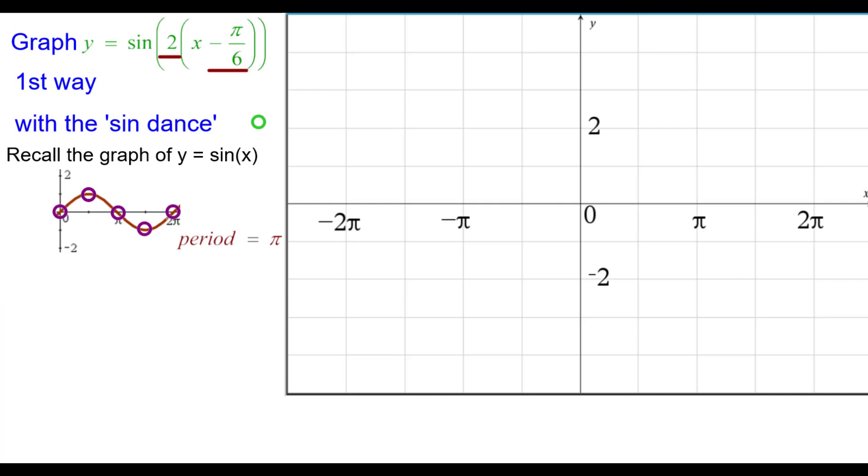So the period is pi. The other parameter, the minus pi over 6, shifts each point to the right, pi over 6 units, a phase shift, pi over 6 to the right.